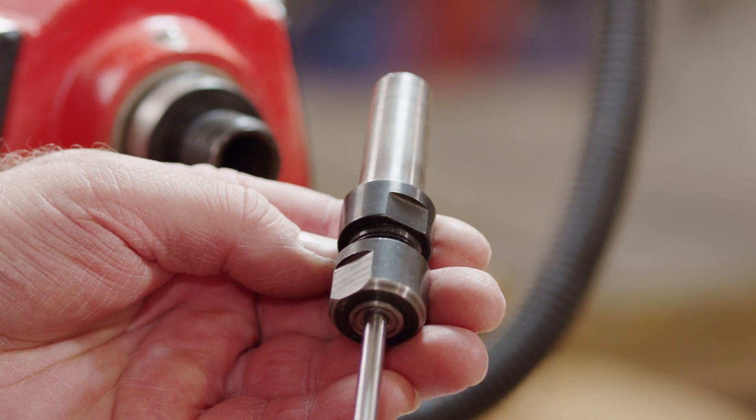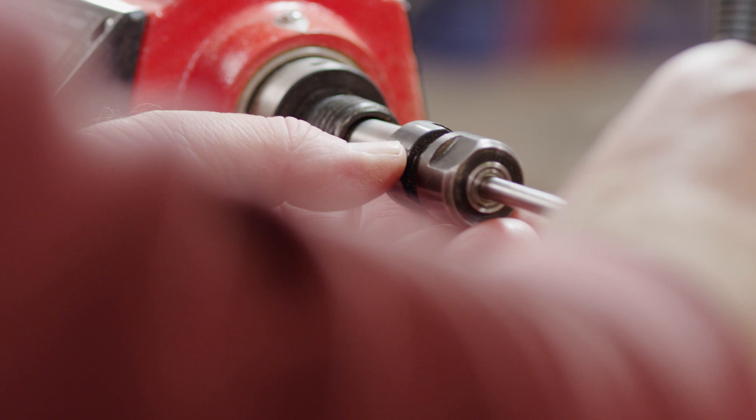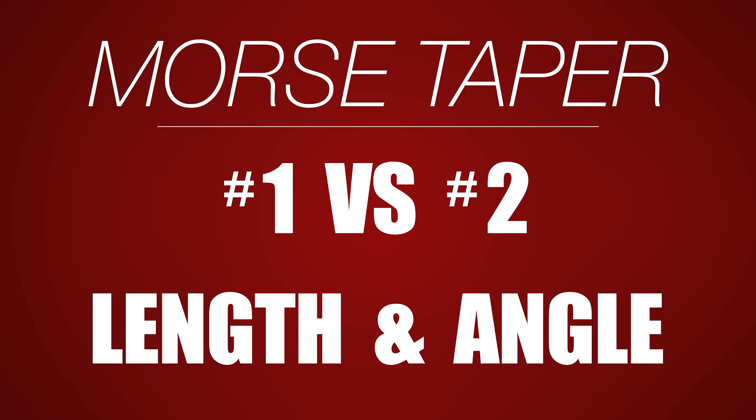The tapered hole on the headstock spindle will be a number one or number two Morse taper. The difference between a number one Morse taper and a number two is basically the length and angle of the taper.